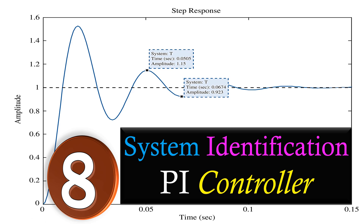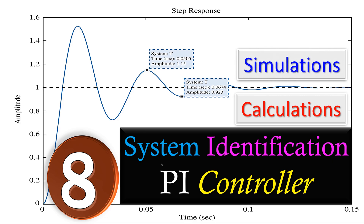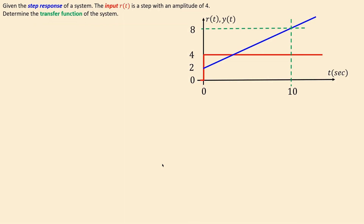Hi everyone and welcome back to a new video about system identification. This is our example number 8. In this example we will see how we can determine a transfer function of a controller. In this specific case we will discuss the PI controller. We will look at calculations step by step and verify this using simulations in MATLAB.